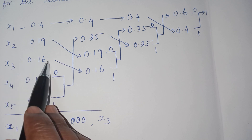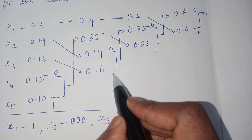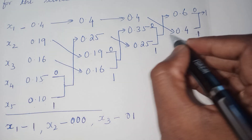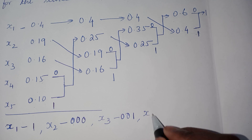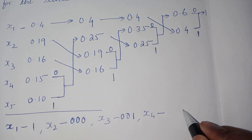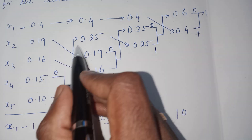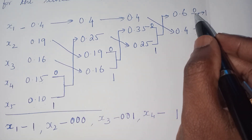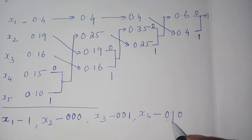For x3, follow the same right-to-left pattern. The first branch is 1, followed by 0, then 0. So the code for x3 is 001. For x4 with probability 0.15, track it: 0 for the first branch, then 1, then 1, then 0. So the code for x4 is 0010.